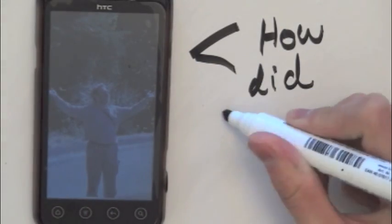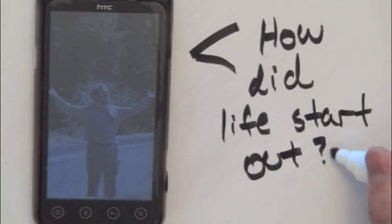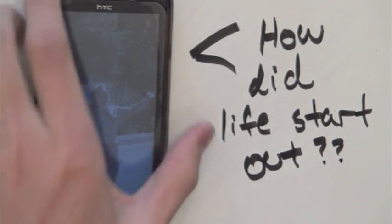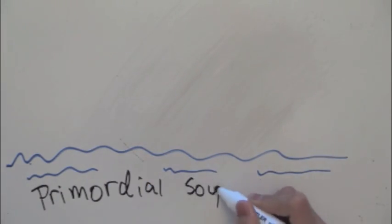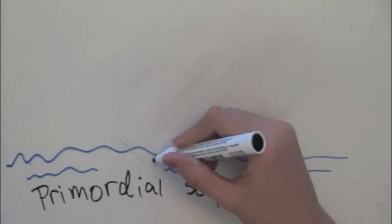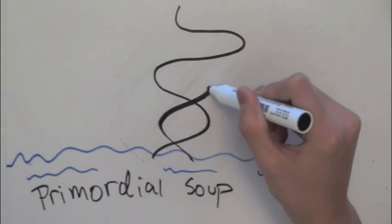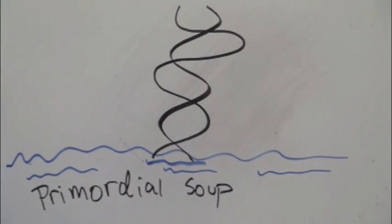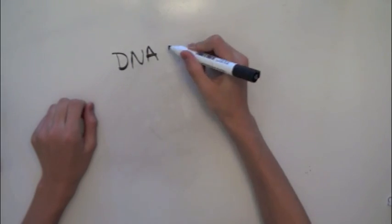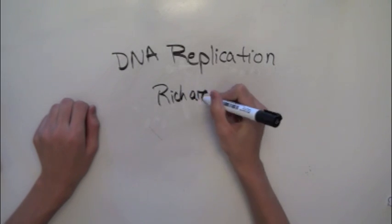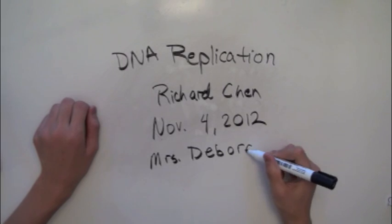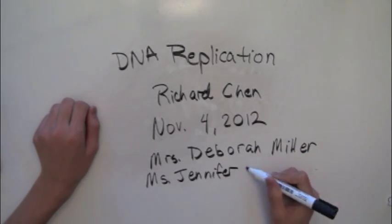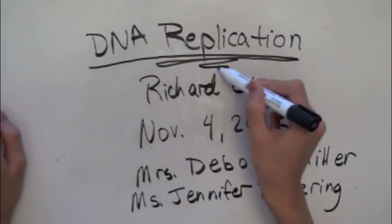The question that every biologist in the history of science has ever wondered: how did life start out? After centuries of theories and experimental research, we think we found the answer. Over 3.5 billion years ago, out of the depths of primordial soup came the inception of the first self-replicating molecule. Although in modern times, this extraordinary molecule does require some help. This molecule is the basis for every single organism which has ever walked this planet, including you and I. This molecule is DNA, and this is DNA replication.